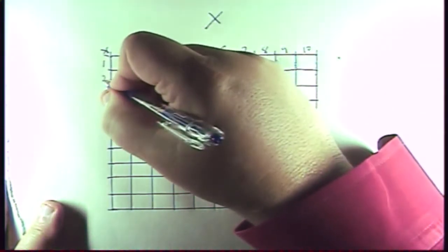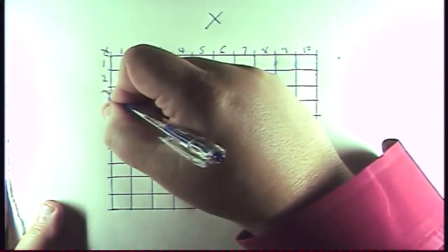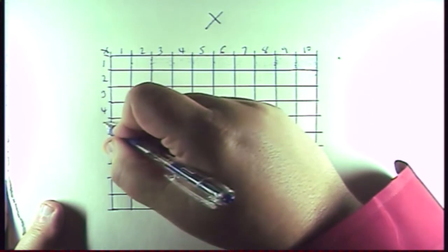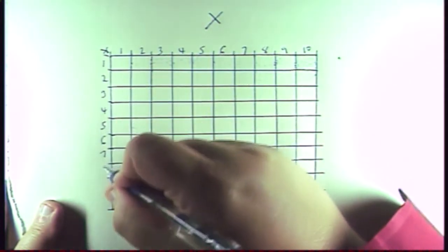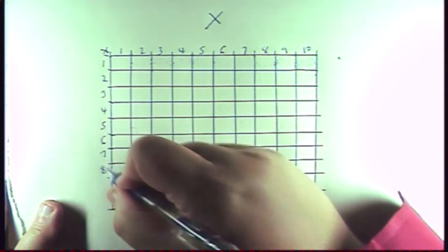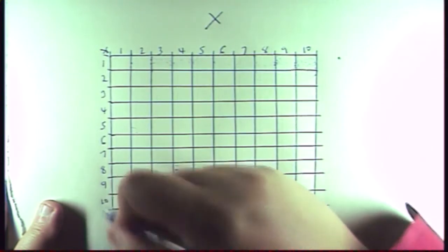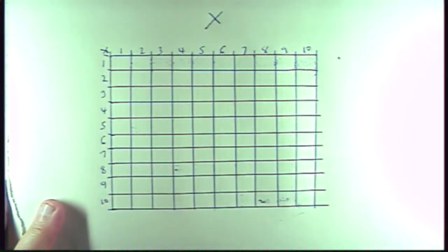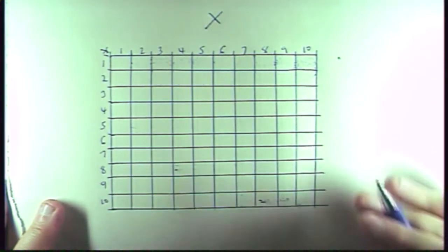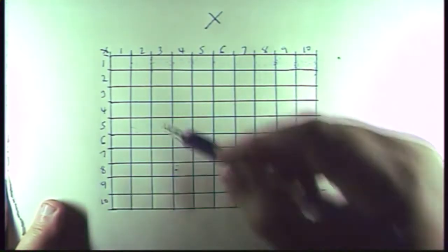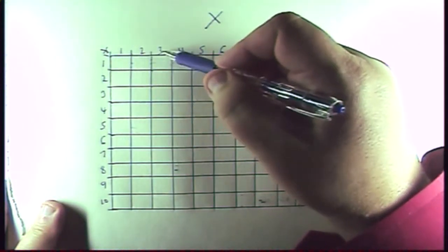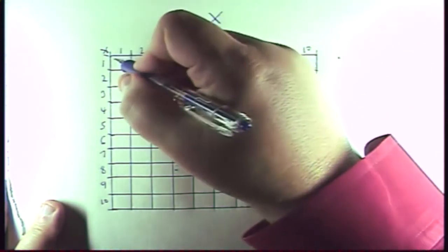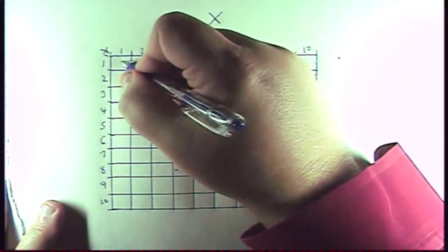And then down the side: one, two, three, four, five, six, seven, eight, nine, and ten. We're going to start out by doing the easiest ones. One times one is one, one times two is two, one times three is three. So these numbers here can just be repeats.